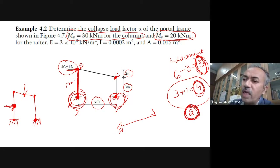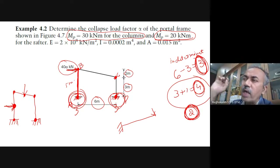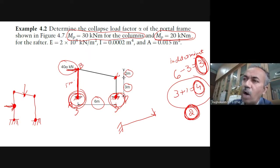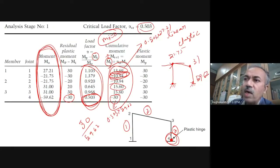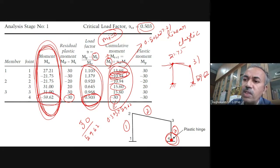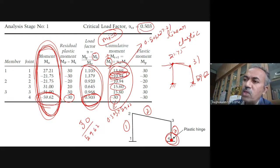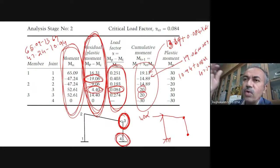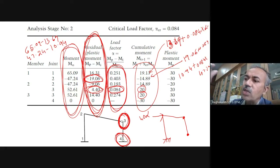For a portal frame also, the only thing is you should be able to identify where the hinge gets formed. Draw the bending moment diagram — wherever bending moments are high, those are the places where hinges will get formed. In this problem, no need to identify anything — you just find out the bending moments and automatically know where the first hinge will get formed.